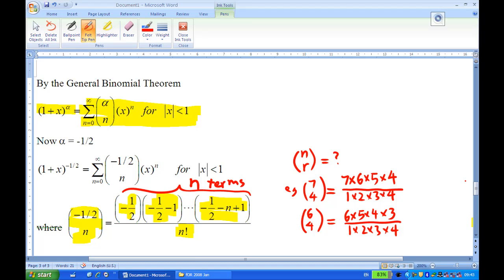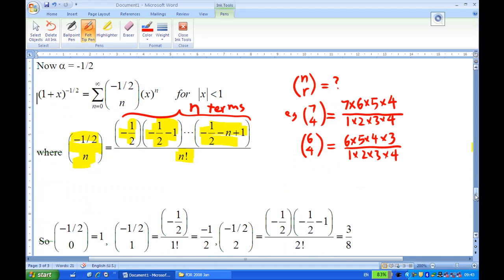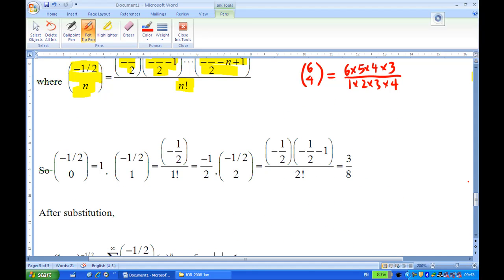Having known that, we'll go ahead and find the first 3 terms, n equals 0, 1 and 2. Notice that when n equals 0, n choose 0 factorial is 1. In particular, you notice that n choose 0 is 1. So, alpha choose 0 will be 1.